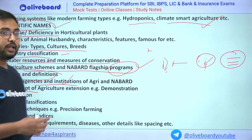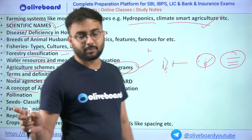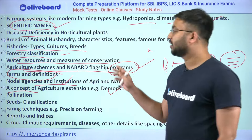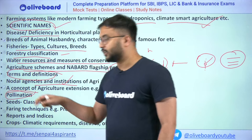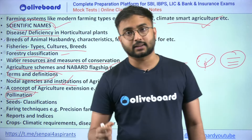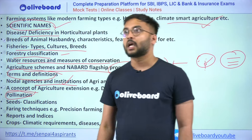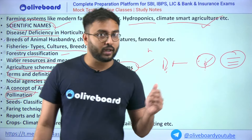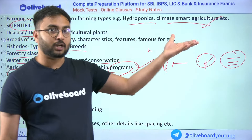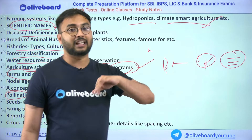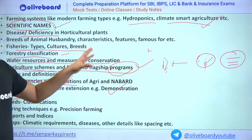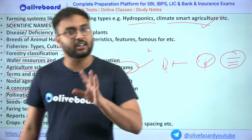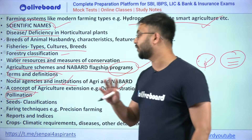Agricultural extension concepts include various types such as method demonstration and demonstration. There are also topics related to basic science — not agriculture per se — including pollination, fertilization, and morphology of fruits and flowers. Mesocarp, endocarp, exocarp, and flower parts like stigma and style — these are essentially 11th and 12th-grade biology questions. Make sure you revise by watching one or two videos on the morphology of fruits and flowers, as these are very important.